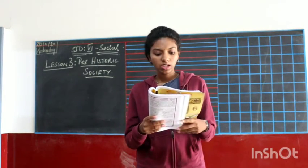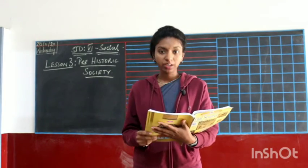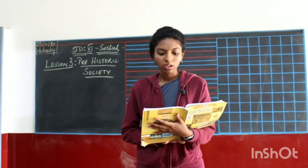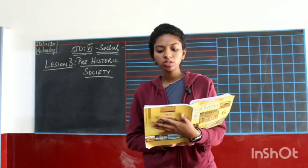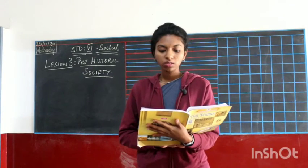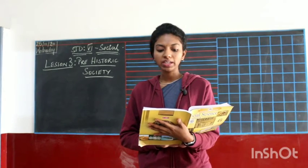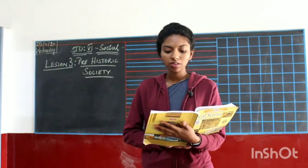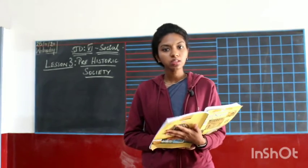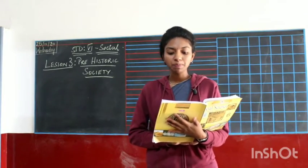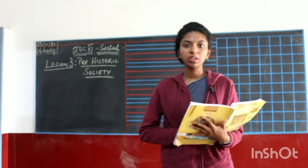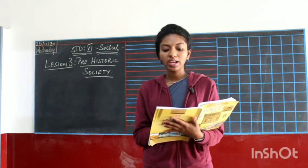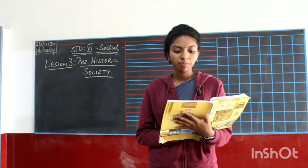We'll be starting from page 59. Origin of human beings and their development: scientists say that the earth was born 4,600 million years ago. The first living beings to appear on this planet were single-celled bacteria called prokaryotes.